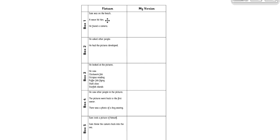So at the start of the story Flotsam, in box one, Sam was on the beach, a wave hit him, he found a camera. That's the beginning that sets the scene. He discovers this camera and that's where his adventure begins. In box two, he asked other people but they didn't know who it belonged to, and he had the pictures developed. There was that chatty woman in the shop. He waited patiently outside.